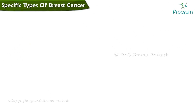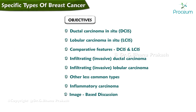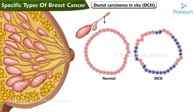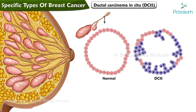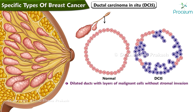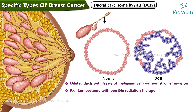Ductal carcinoma in situ is a type of breast cancer characterized by dilated ducts that have layers of malignant cells without stromal invasion. Treatment consists of a lumpectomy with possible radiation therapy.